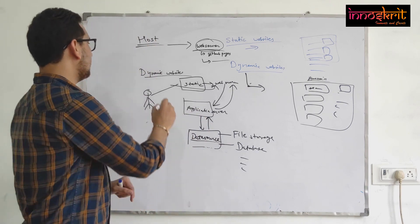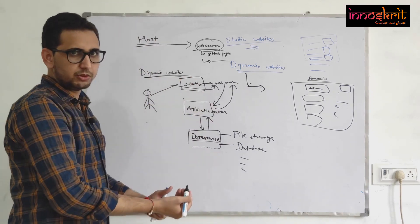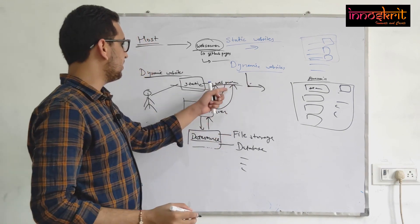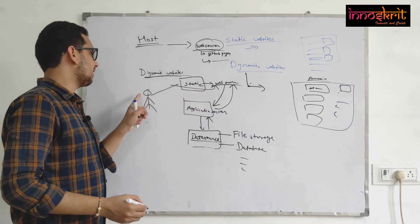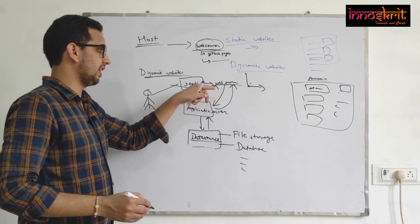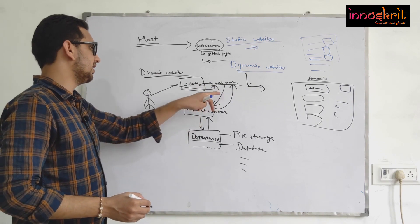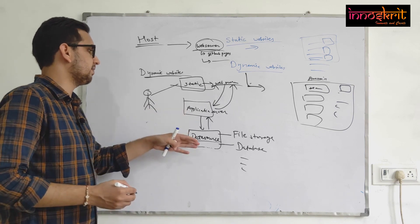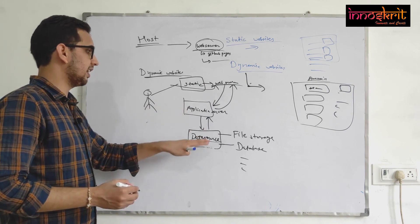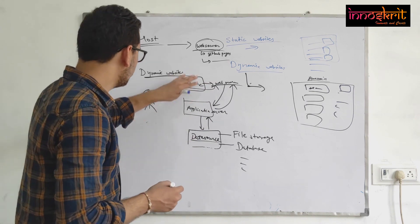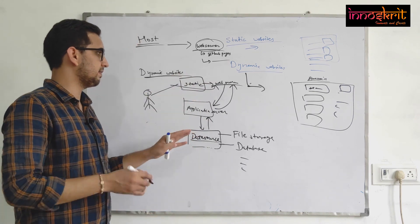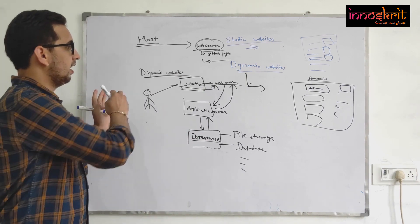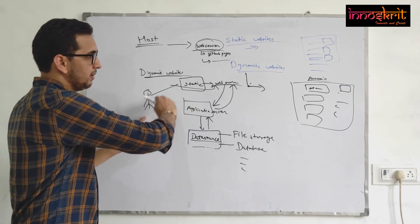The data source doesn't have to be a specific kind of database — it can be a file storage system, a database, or any other kind of data source. Your application server talks to the data source layer. So in dynamic websites there are mainly three components: a web server hosting static content, an application server handling dynamic logic, and a data source where data is stored and retrieved.